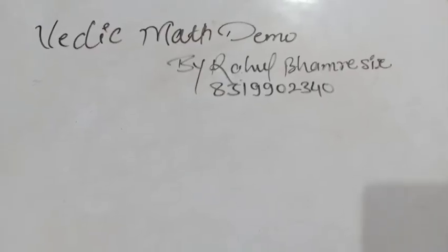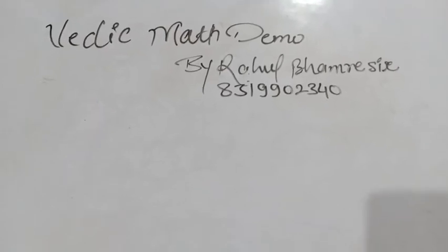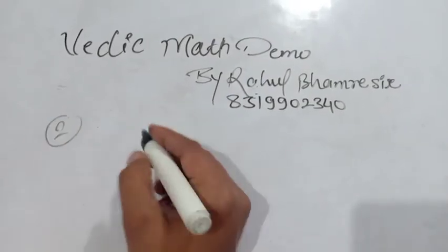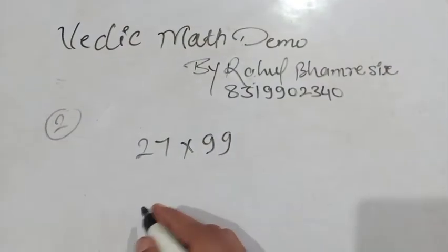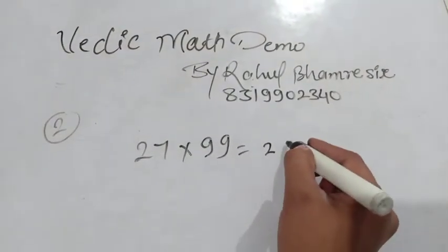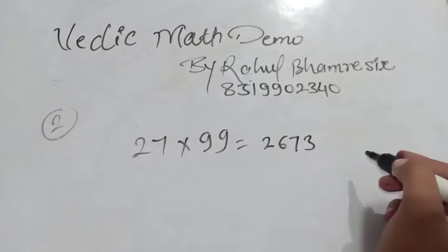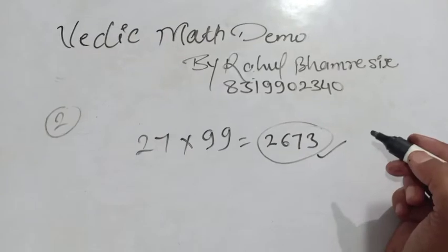Hello guys, welcome back to my video. I am Raoul Bhamre. This is also a demo type class. The formula second. If we multiply 27 by 99, the final answer 2, 6, 7 and 3. This is your final answer in just a second. How it can be possible?